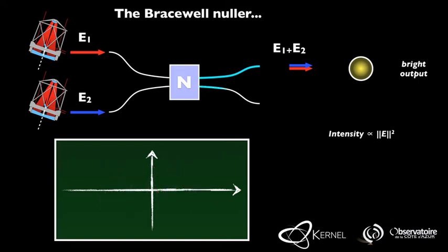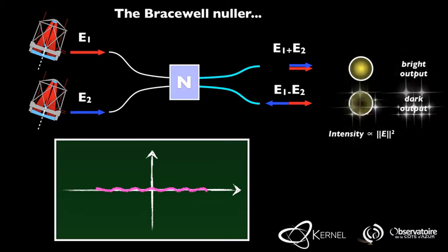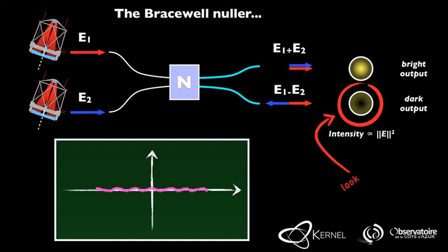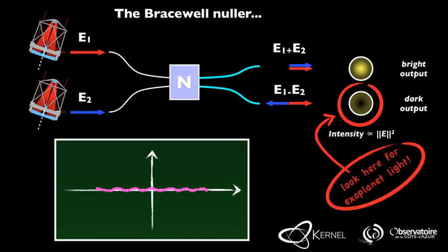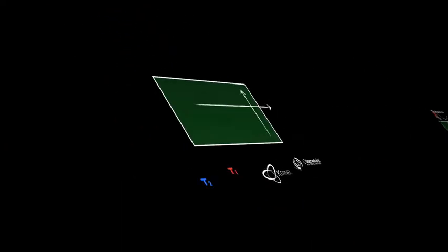For the second output, the combiner introduces a pi-phase shift, that is half a period, to the electric field E2. The two fields, now with opposite phases, cancel each other, leading to an intensity equal to zero. In this so-called dark output, where the light of a star has been cancelled, one will look for the weak signals associated to a potential off-axis companion.